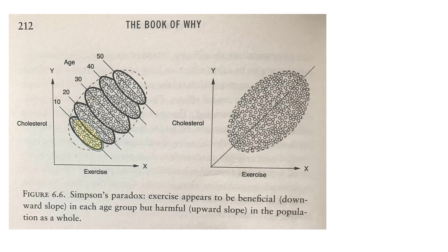But when you actually aggregate all those together, looking at the population as a whole, you actually see that there's an upward trend. It appears that the more exercise they do the higher the cholesterol. You get this very counterintuitive reversal whereby when you look at the population as a whole, more exercise leads to higher cholesterol, even though within each age category exercise leads to reduced cholesterol.